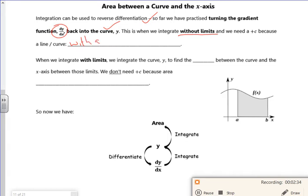If we integrate with limits, we find the area between the curve, the x-axis, and the limits. So we don't need a plus c because area doesn't have a y-intercept.